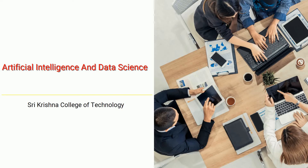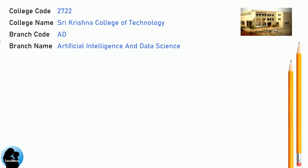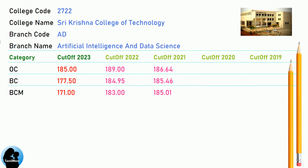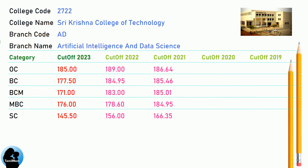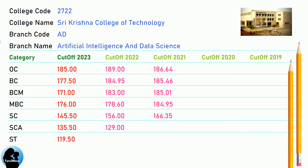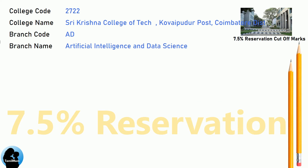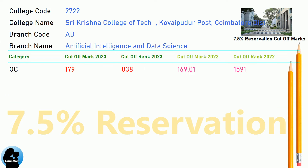DNA Cut-off for Shri Krishna College of Technology in Artificial Intelligence and Data Science. DNA 7.5 Reservation Cut-off for Shri Krishna College of Technology in Artificial Intelligence and Data Science.